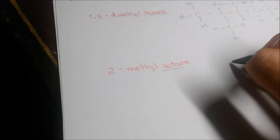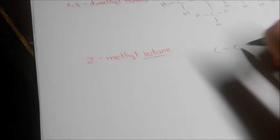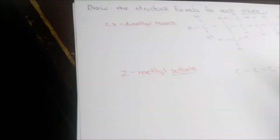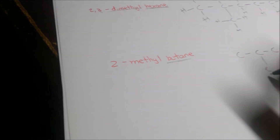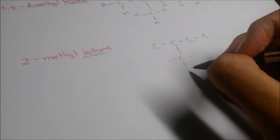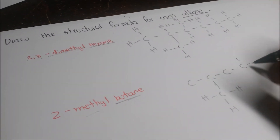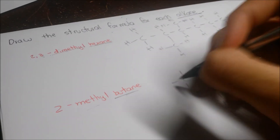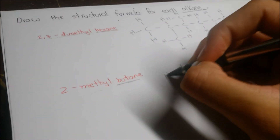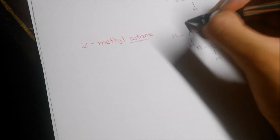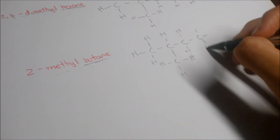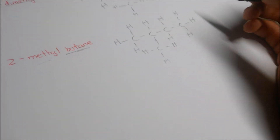The second example is 2-methylbutane. We identify the parent chain — butane — which has four carbon atoms, so we draw carbons one through four. Then we identify the alkyl group: a methyl on carbon two. Finally, we fill with hydrogens so that each carbon atom has four bonds.